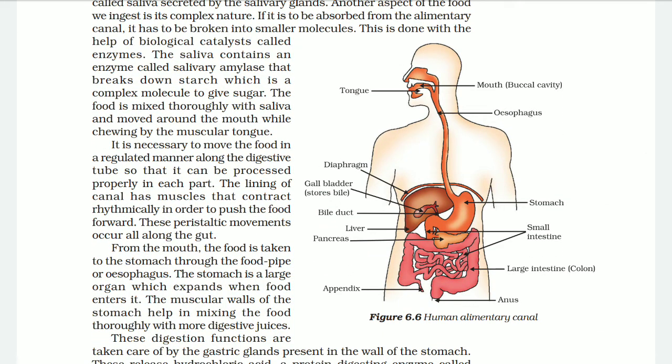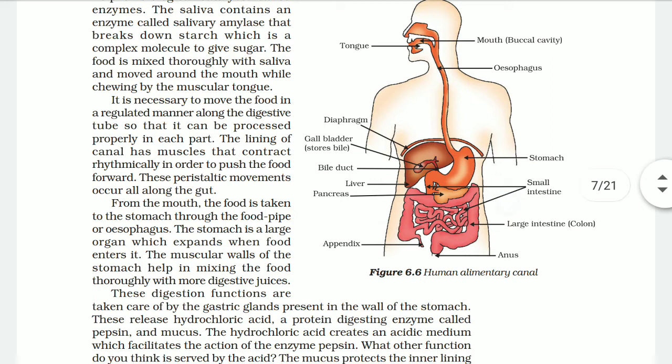It is necessary to move the food in a regulated manner along the digestive tube so that it can be processed properly in each part. The lining of the canal has muscles that contract rhythmically in order to push the food forward. This peristaltic movement occurs all along the gut.